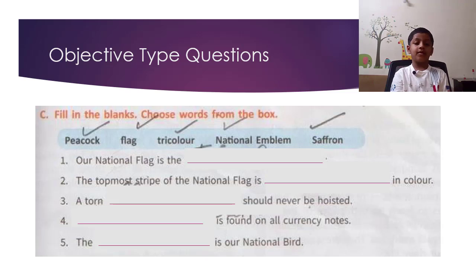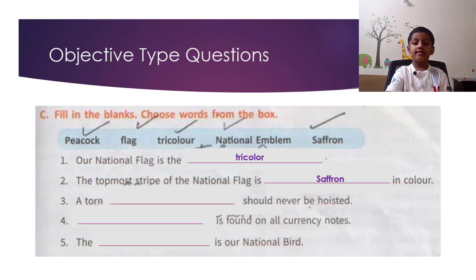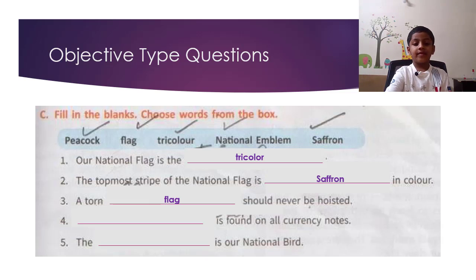Fill in the blanks. Choose words from the box. Question 7: Our national flag is the tricolour. Question 8: The topmost stripe of the national flag is saffron in colour. Question 9: A torn flag should never be hoisted. National emblem is found on all currency notes.